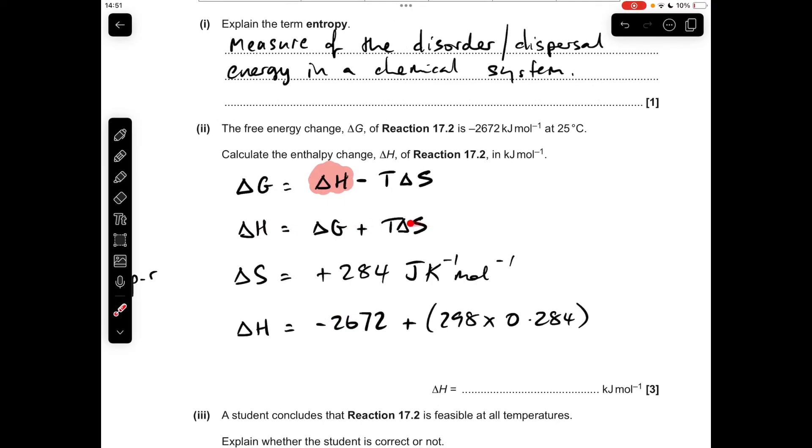Now we can put the numbers into the ΔH expression, the one I mentioned a minute ago. Just be careful here - remember the temperature has got to be in Kelvin, but because the ΔG is in kilojoules per mole, we've got to convert the ΔS into kilojoules effectively.